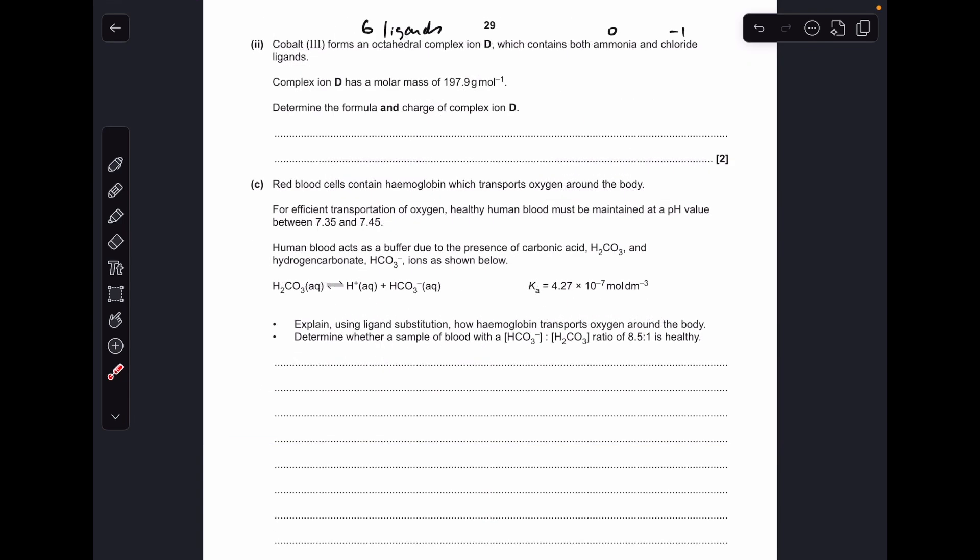Moving on to the next part: cobalt(III) forms an octahedral complex ion D. Octahedral obviously means we've got six ligands around the cobalt 3+ in the middle, and it contains both ammonia and chloride ligands. So I'm just writing above there the charge of the ligand: ammonia has got no charge, chloride is -1.